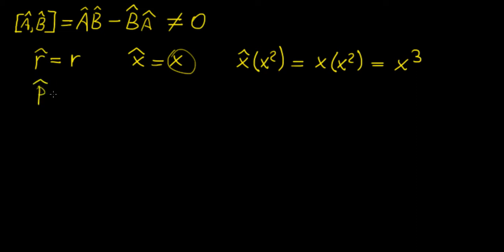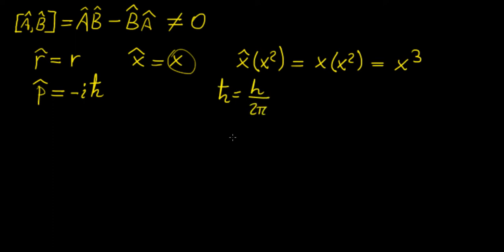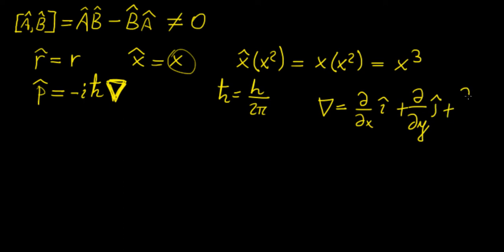The second operator I'm going to introduce is the momentum operator. This one is a bit more elaborate because we have the imaginary unit here — minus i times the reduced Planck constant, which is just the Planck constant over 2π. This is the standard symbol used in quantum mechanics. We multiply this by the del operator, which is the nabla symbol. As we recall from vector calculus, nabla is simply the gradient operator — it takes the first partial derivatives — and it is a vector quantity.